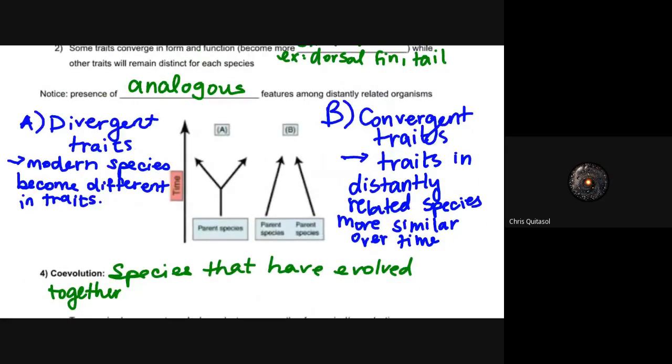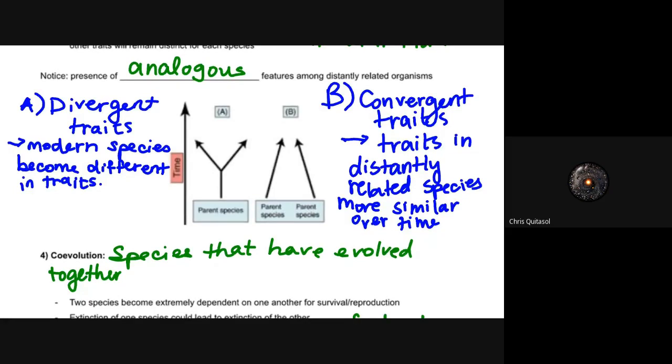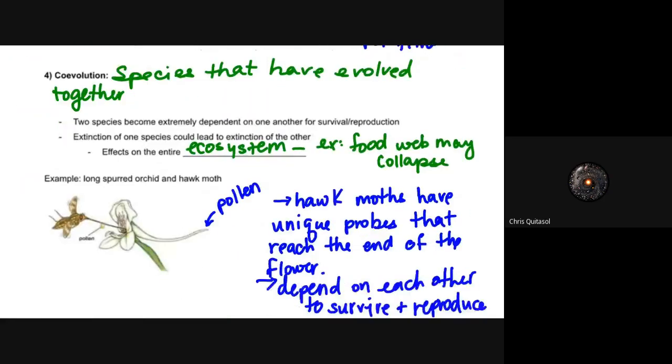And again, note the presence of analogous features among differently related organisms. So when we look at divergent and convergent evolutions, it's very important to understand that in divergent traits, those modern species become different in traits and they diverged very early on from that parent species. Whereas convergent traits, those convergent traits, they're distantly related species, they had maybe a common ancestor several hundred or maybe even thousands of generations prior, but because of the environment that they live in, they start to become more and more similar despite sharing very little actual genetic linkage to each other.